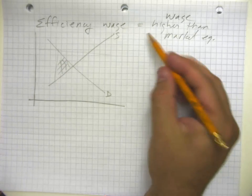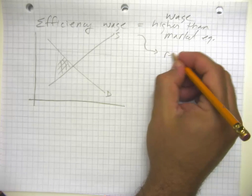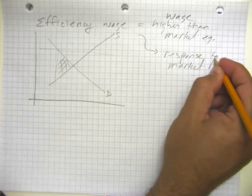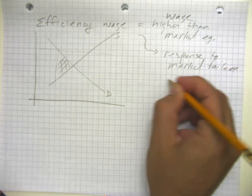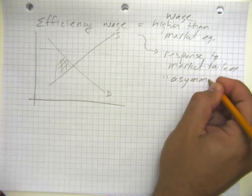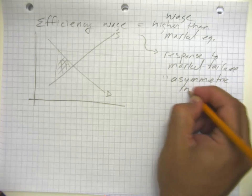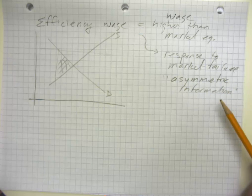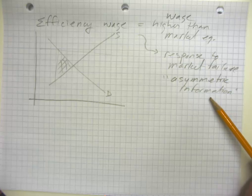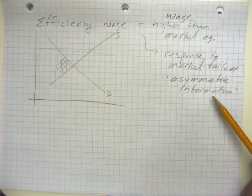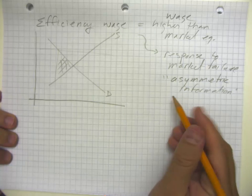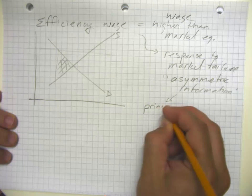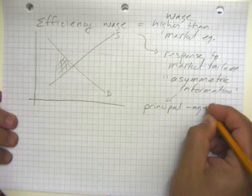So the efficiency wage is itself a response to a market failure. And the particular type of market failure here is what's called asymmetric information. Asymmetric information means that one of the people in the transaction knows more than the other. So you know whether or not you slacked off and your supervisor or boss maybe doesn't.